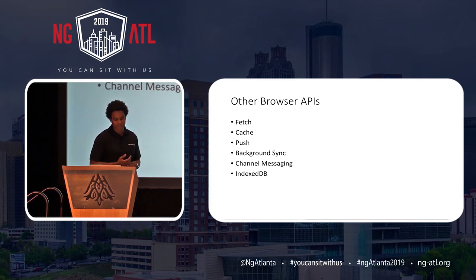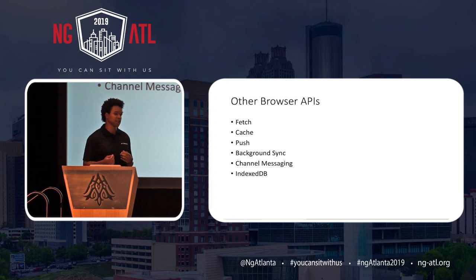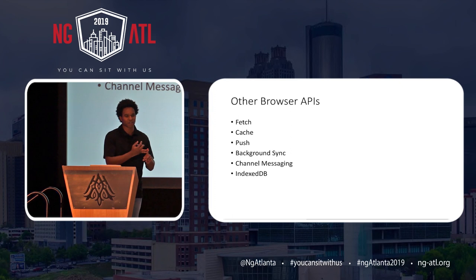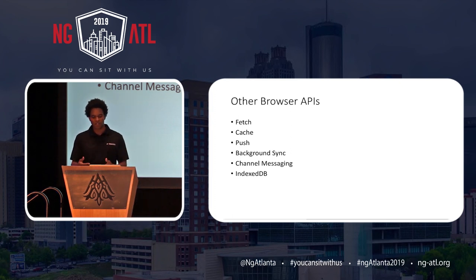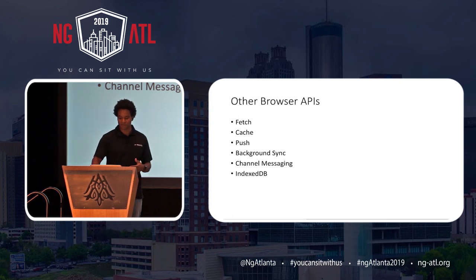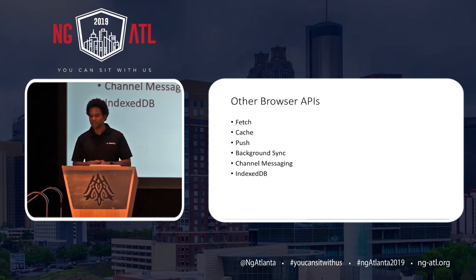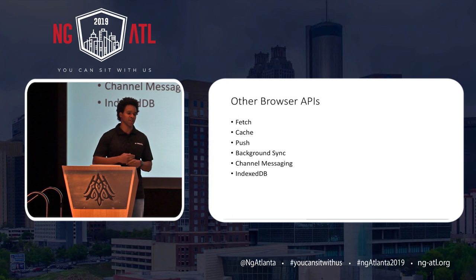Background Synchronization is an API that ensures requests and responses go through. When your application is offline or has a weak network connection, this API manages those requests to make sure they are fulfilled. There's also Channel Messaging, which lets you allow communication between workers registered under the same origin and path — so if you have a web worker and a service worker that need to communicate, you'd use this. And then there's IndexedDB, which is like a smaller asynchronous database in your browser.